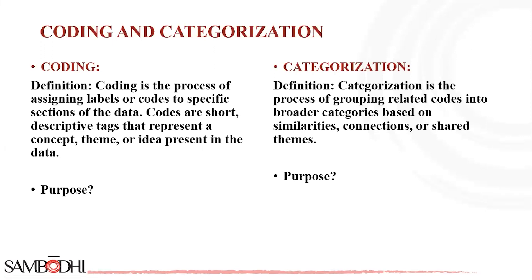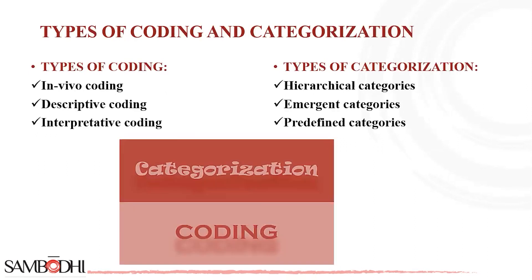Next, after coding, comes categorization. Categorization is the process of grouping related codes into broader categories based on similarities, connections or shared themes. It helps in organizing and condensing the numerous codes into higher-level themes or concepts, providing a more structured and thematic overview of the data.